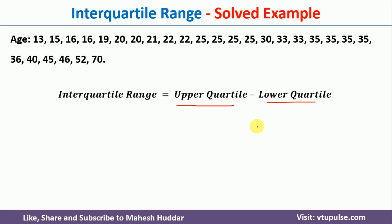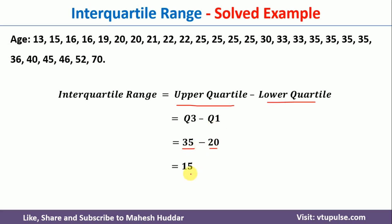Now we will find the interquartile range. Interquartile range is always equivalent to upper quartile minus the lower quartile — that is Q3 minus Q1. Q3 is 35 and Q1 is 20, so 35 minus 20 gives 15. So 15 is the interquartile range in this case.